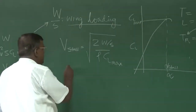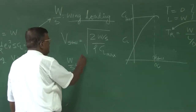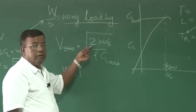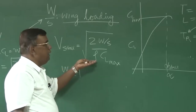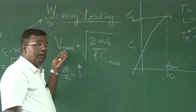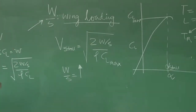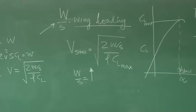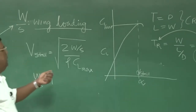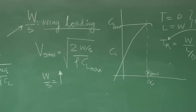If W/S is increased, what will happen? V stall will go on increasing. Similarly, if rho goes on decreasing — for example, taking off in Kanpur versus taking off in Leh and Ladakh — the V stall will also increase in Leh and Ladakh for the same W/S or CL max. For the same W/S and the same CL max, if you want to fly at minimum speed with lift equal to weight, that speed will be higher in Leh and Ladakh because rho is less there.